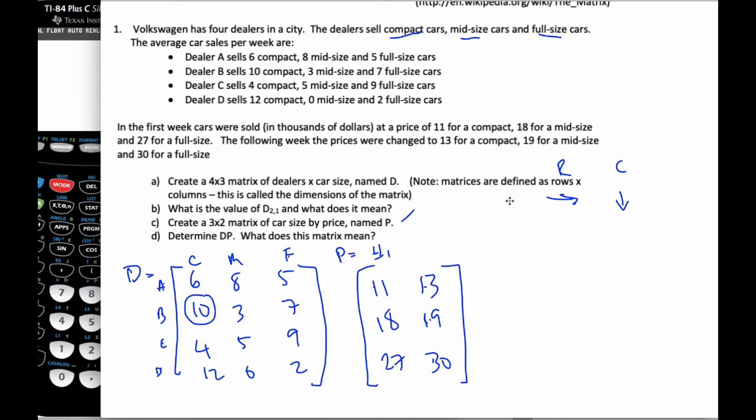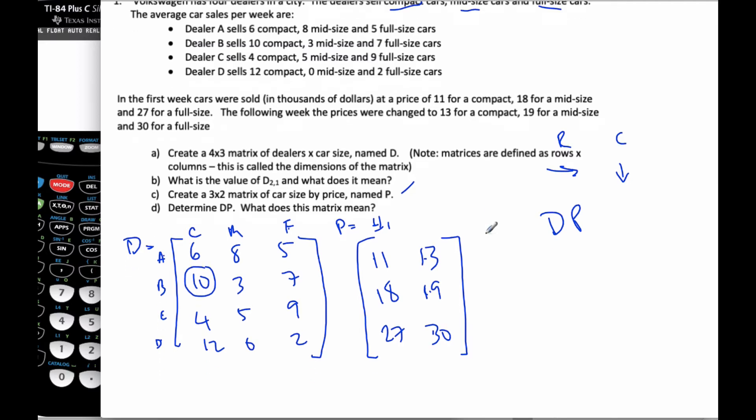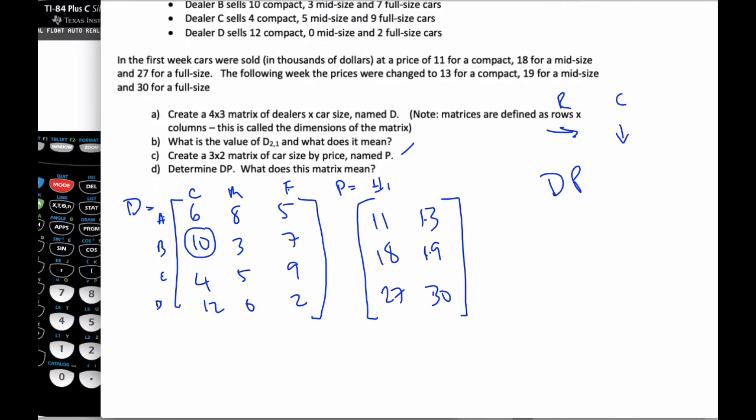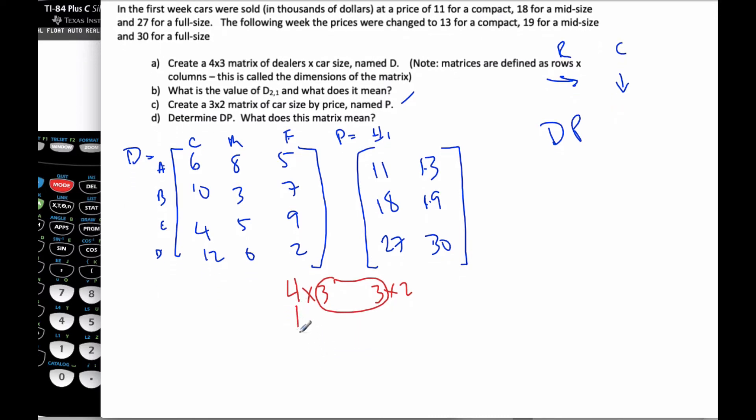Now it says determine DP. DP means I'm going to multiply these two matrices. I know from up here that this is a 4 by 3 and this is a 3 by 2. If these two numbers are the same, then I can multiply. Then and only then can I multiply. And my resulting matrix will end up being a 4 by 2 matrix.